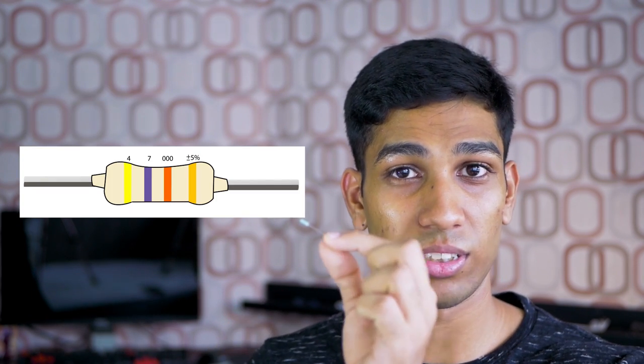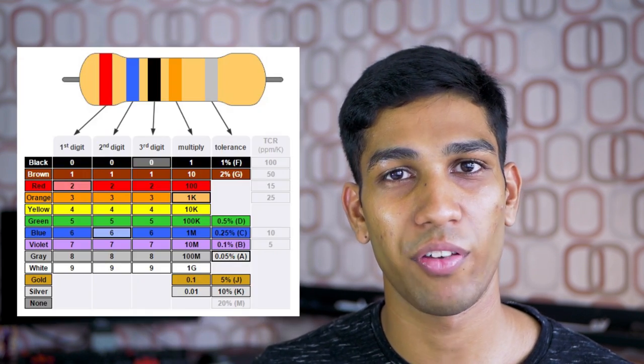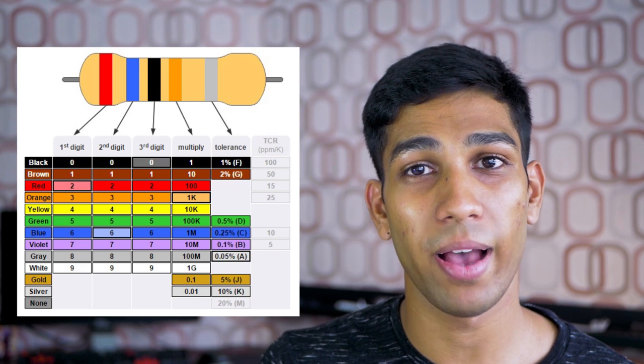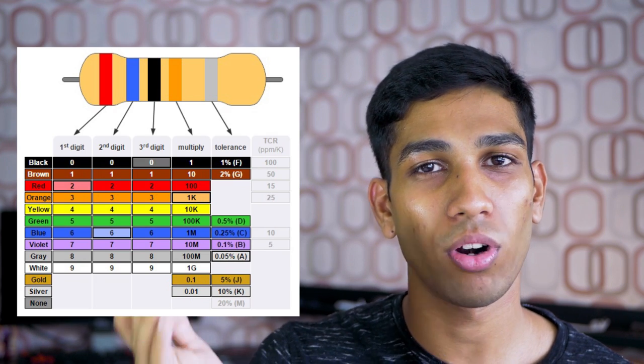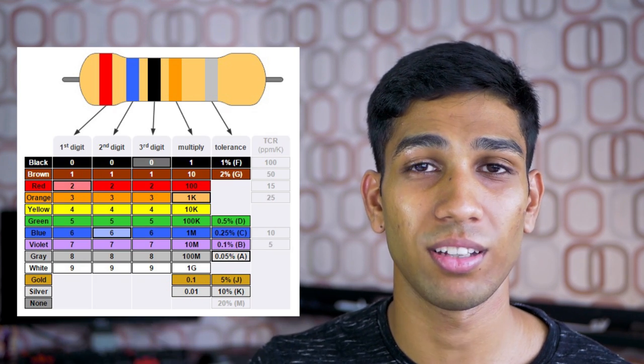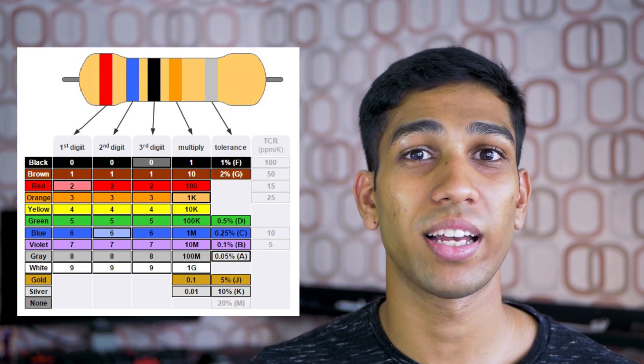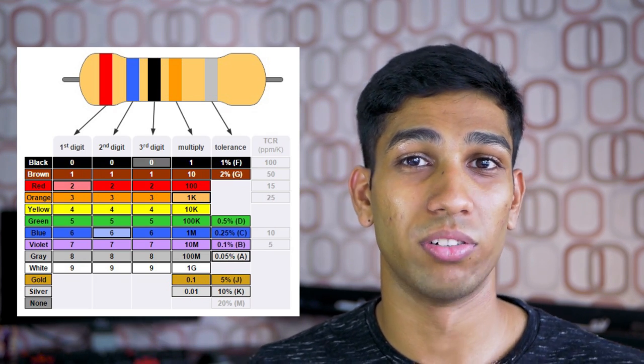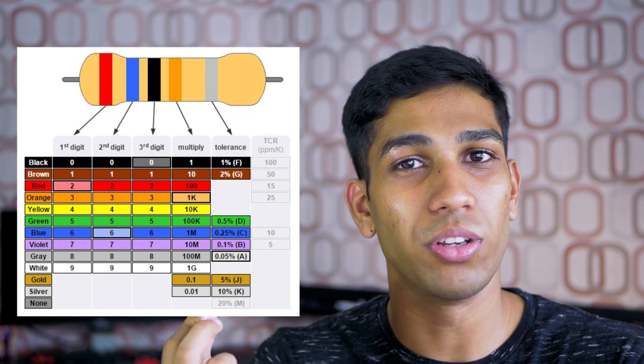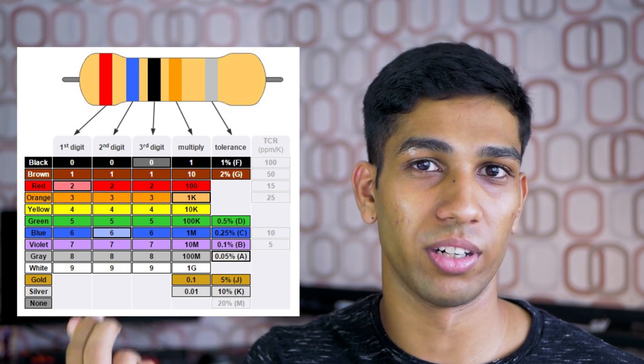If you want to read the value of a resistor, if you look carefully you will see four to six different colored bands on the resistor. If you input these bands into an online calculator or chart, we can understand the resistance value of a resistor, including its tolerance level.